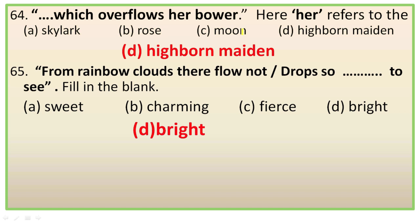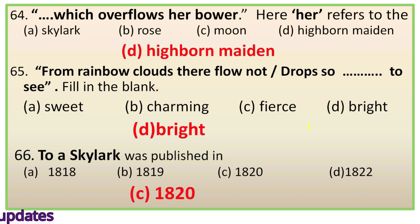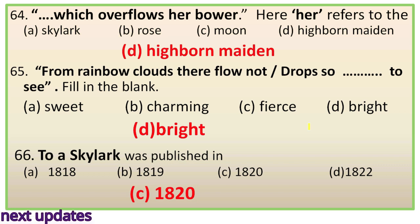Question 66: 'To a Skylark' was published in — options are 1818, 1819, 1820, 1822. We know that 'To a Skylark' was published in the 'Prometheus Unbound' volume in 1820, and in this volume another famous work, 'Ode to the West Wind,' was also published. So the poem was published in 1820.